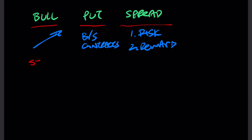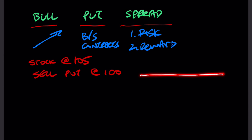Let's illustrate it with a simple example. We have a stock at $105, and we want to sell a put on the stock at $100. If we just did this action alone — with the stock tanking below the $100 level — then you need to have the cash to secure this put option, which would be $100 times 100 shares, equaling $10,000.